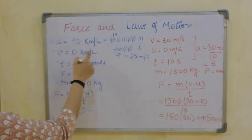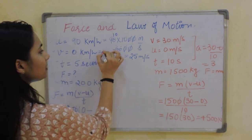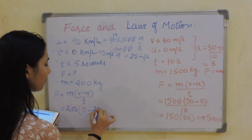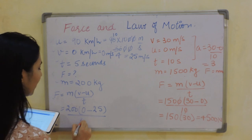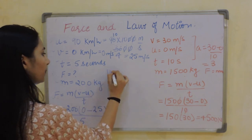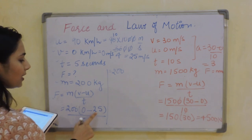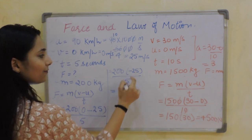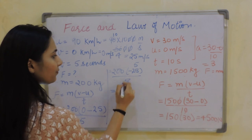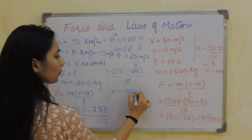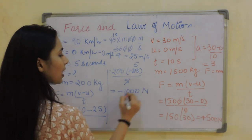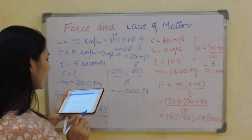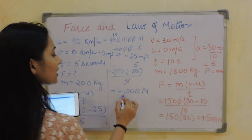Now using F equals m(v minus u)/t: F equals 200 times (0 minus 25) divided by 5. That gives 200 times minus 25 divided by 5, which is 200 times minus 5, giving minus 1000 Newton. Since there is a deceleration, the force is negative. The force exerted by the brakes on the motorcycle is 1000 Newton.